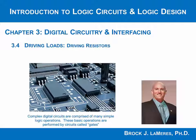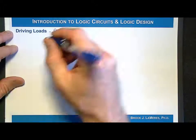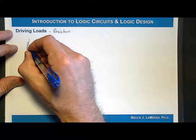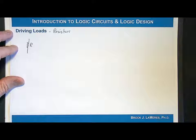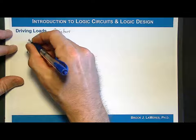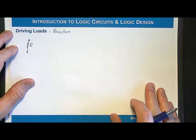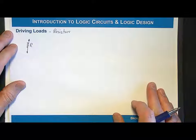A resistor is another very common type of load that a digital gate drives. A resistor is a passive electrical component or device that basically describes the relationship of the current to the voltage through it. It's passive such that it doesn't require power to operate. A resistor can be a real thing you can go purchase, but resistance is also a model of the way things behave.